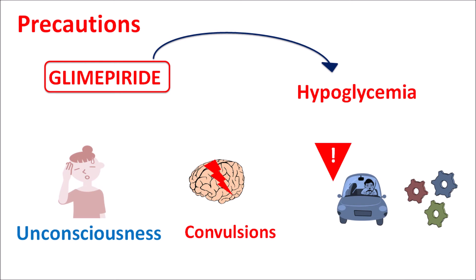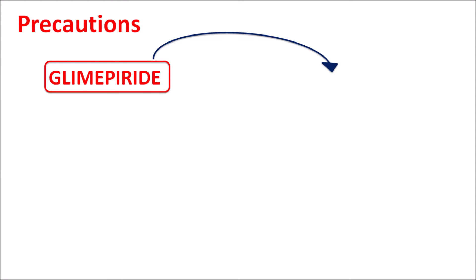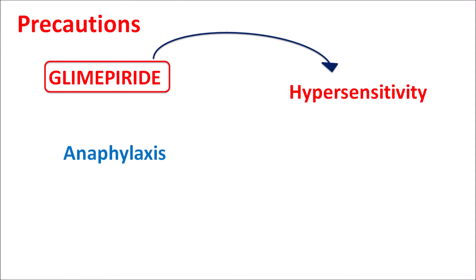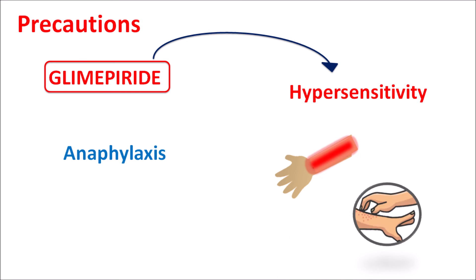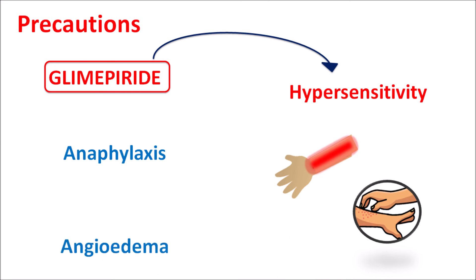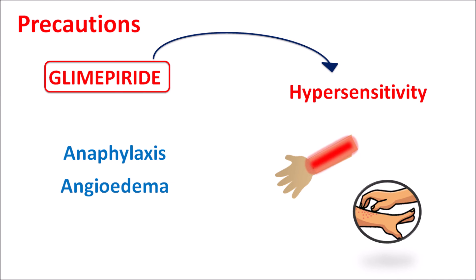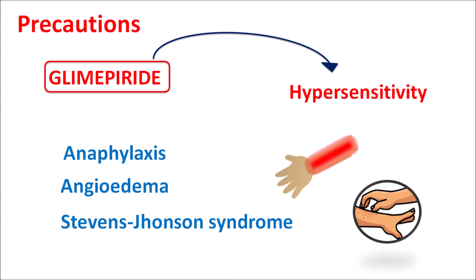Similarly, being a sulfonylurea, this drug can produce some hypersensitive reactions such as anaphylaxis resulting in increased redness, swelling, and itching. It can also produce angioedema resulting in swelling of the lips, tongue, and pharynx. It can also produce serious hypersensitive reactions such as Stevens-Johnson syndrome, which can affect the skin and soft tissues. If any hypersensitivity develops towards glimepiride, this drug should be contraindicated.